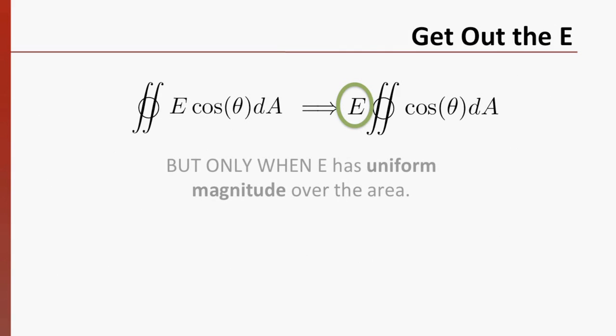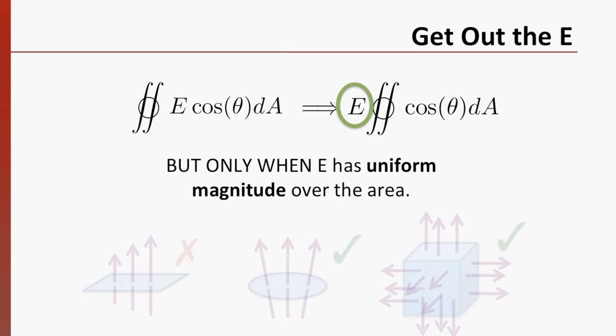Let's pursue our goal of not doing an integral. We have this integral of E dot dA. Let's write the dot product as a cosine. Under certain circumstances, we can remove the E from the integral. We can only do that when our electric field has uniform magnitude over the entire surface. You can see some examples on the bottom of the screen.